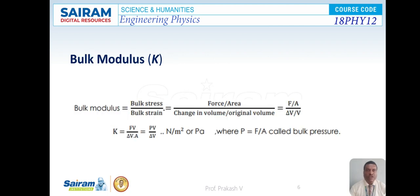Next, bulk modulus is denoted by symbol K. Bulk modulus is equal to the ratio of bulk stress to bulk strain within the elastic limit — that is force per area divided by change in volume to the original volume. So K is equal to FV divided by delta V into A, which equals PV by delta V, with units Newton per meter square or Pascal. Here, P equals F/A, called bulk pressure.